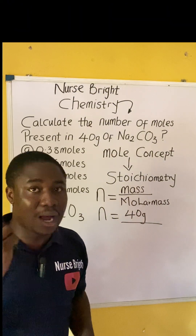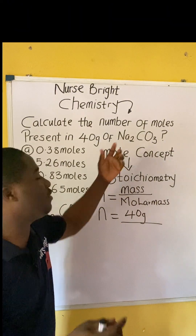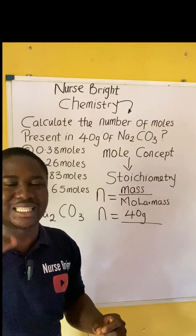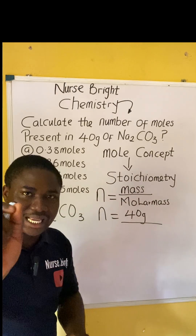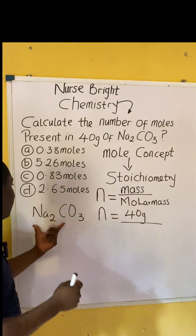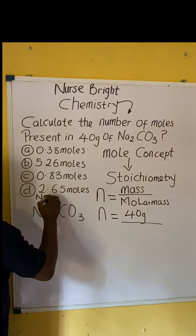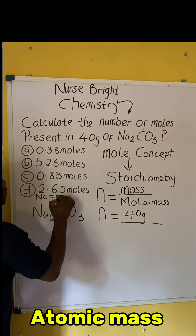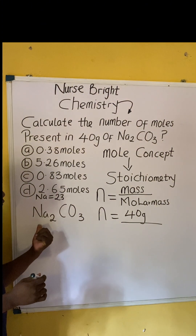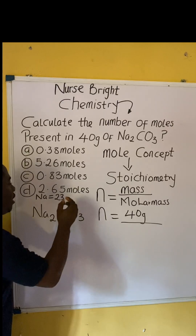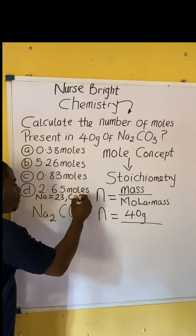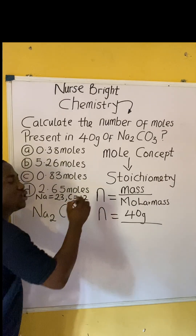The compound is Na2CO3. In most exam conditions, they will give you the atomic masses of the elements. These are the atomic masses of the elements that combine together to form this compound. For sodium, the atomic mass is 23. For carbon, the atomic mass is 12.